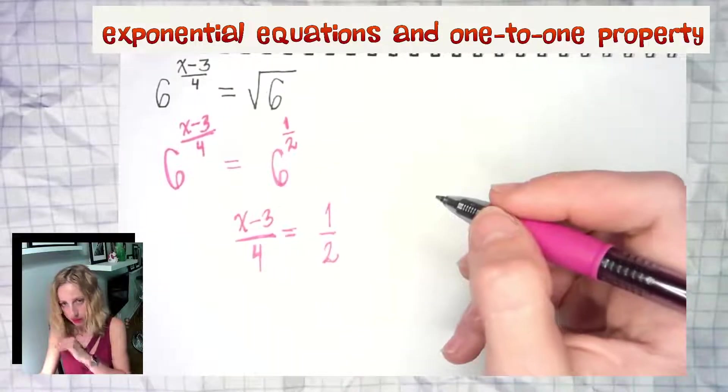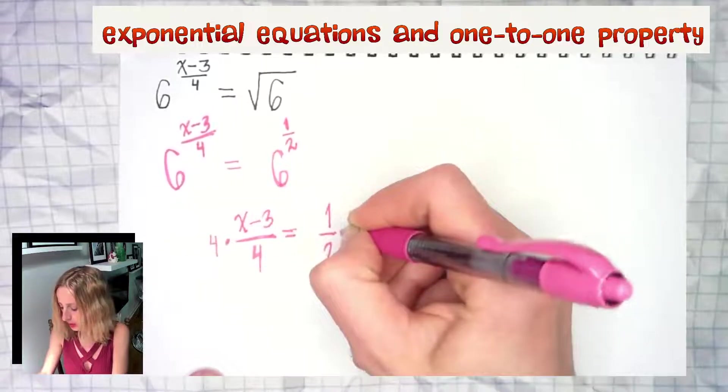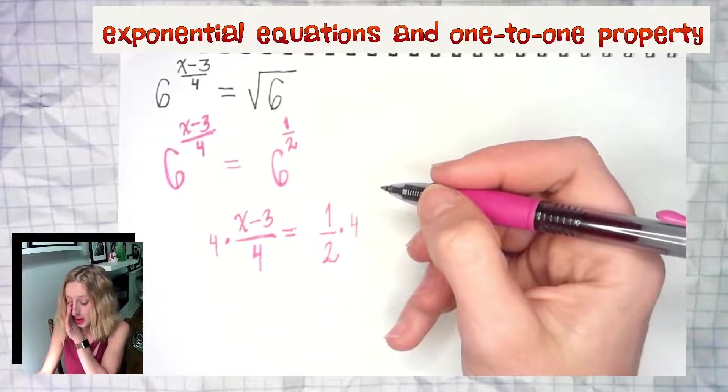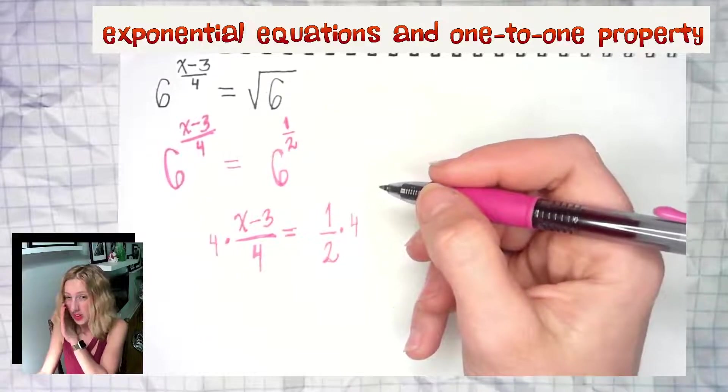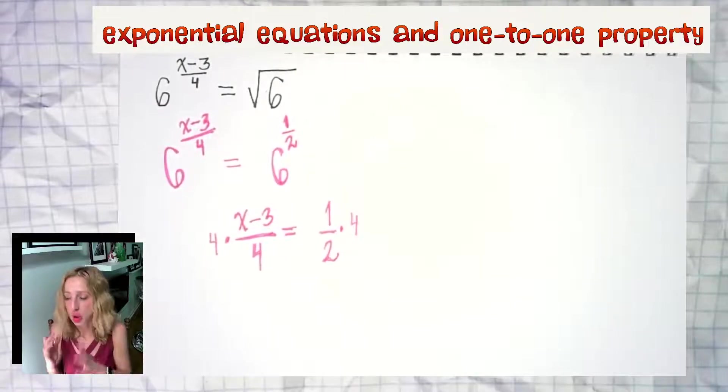So just go ahead and multiply both sides by four. When we solved rational equations, you would multiply through by the least common denominator, which is four. This stuff's connected. Don't be impulsive. Think.